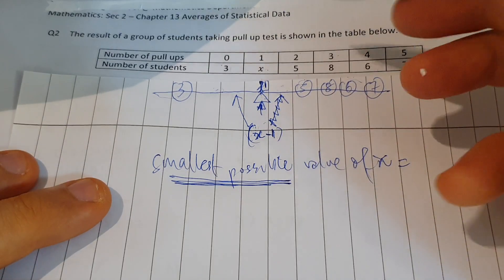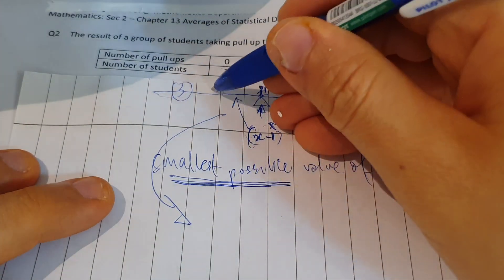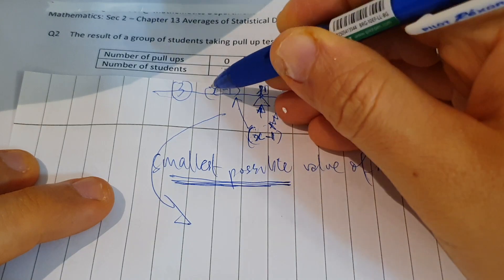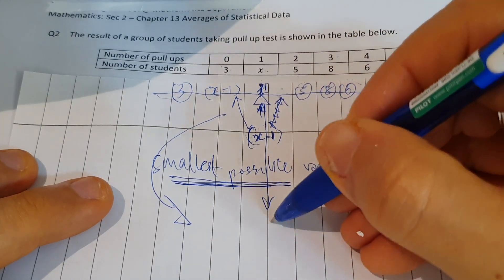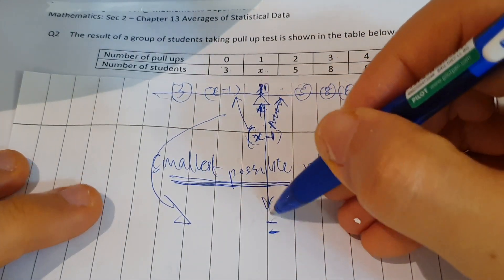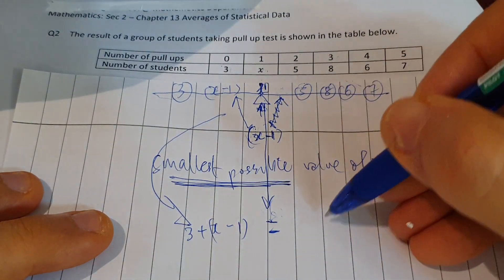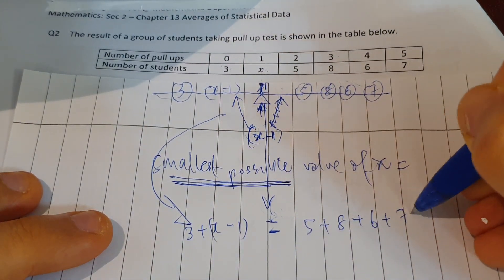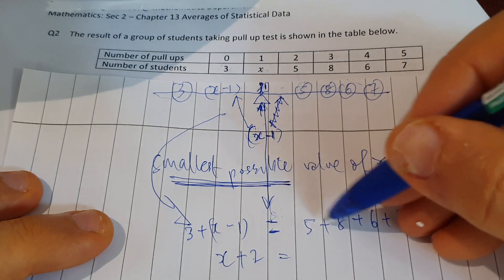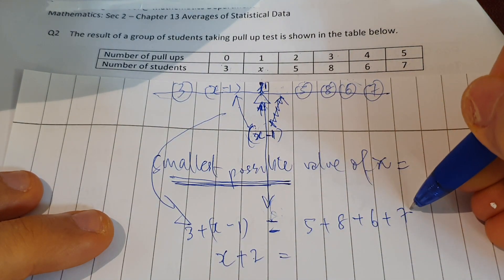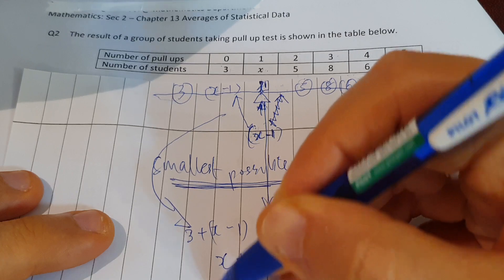Using the seesaw: the left side equals the right side. Left side: three (given) plus x minus one students, giving x plus 2. Right side: five plus eight plus six plus seven equals 26. Setting x plus 2 equal to 26, subtract 2 from both sides: x equals 24. So the minimum value of x is 24.